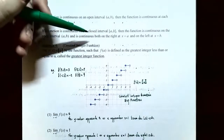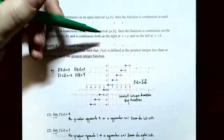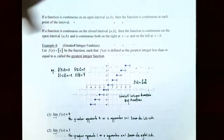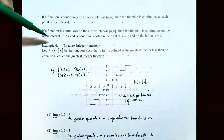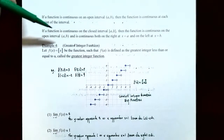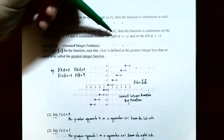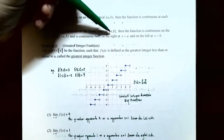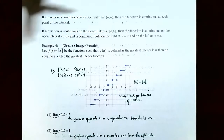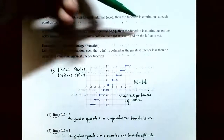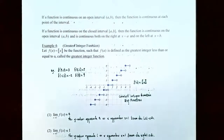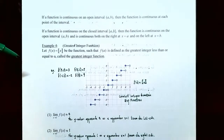A function is continuous on the closed interval [a, b] if it is continuous on every single x value between a and b — the open interval a to b — but also continuous on the right at x equals a, because you can only approach x equals a from the right side, and continuous on the left at x equals b, because you can only approach x equals b from the left side.